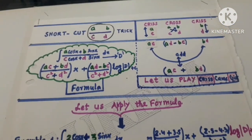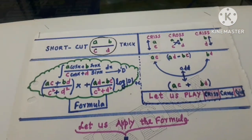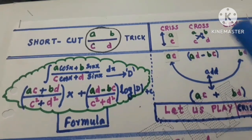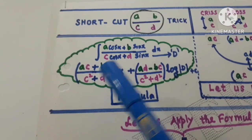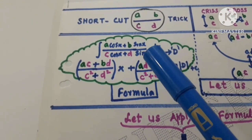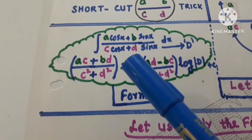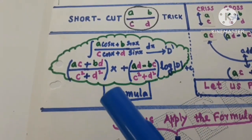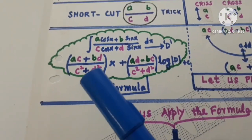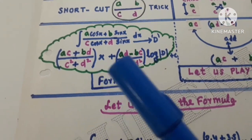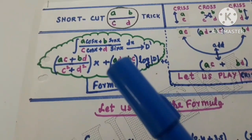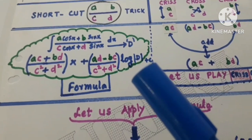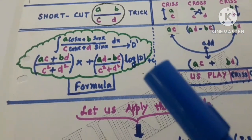Hello friends, I am coming with my notes on magic shot trick number 7. This is the criss cross criss method. The trick is: integration of (a cos x + b sin x) over (c cos x + d sin x). The answer will be: (ac + bd)/(c² + d²) · x + (ad − bc)/(c² + d²) · log of the denominator.